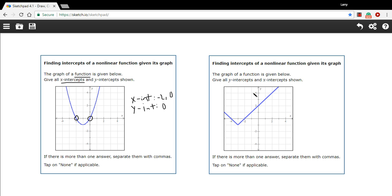Let's try one more. So this one, our x-intercepts are where it crosses the x-axis. So that looks like it's negative 4 and negative 2.